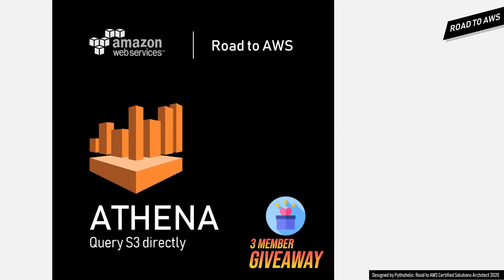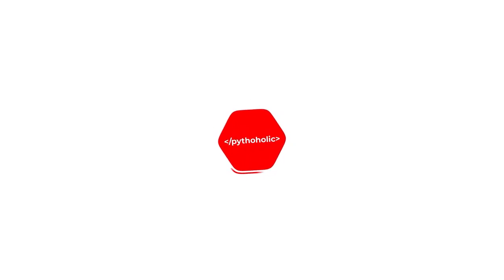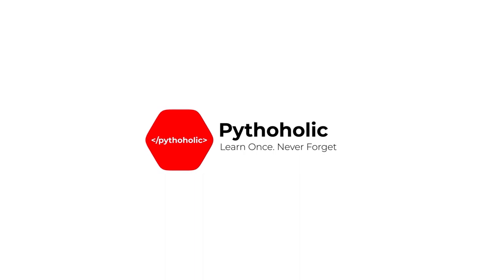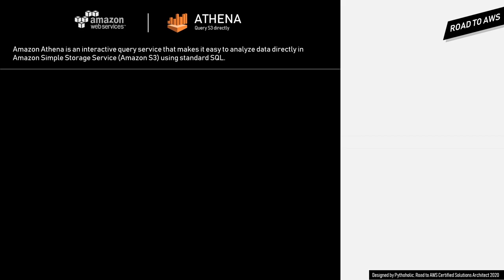In the previous episodes we have already covered Amazon S3, S3 encryption, and storage tiers. In this episode we will be covering Amazon Athena. I know we are moving a bit slow but we will catch up soon. Before talking about Athena, I would request you to watch the S3 episodes we already had to get a better outlook on Athena. If you're already aware of S3, you're in the right place.